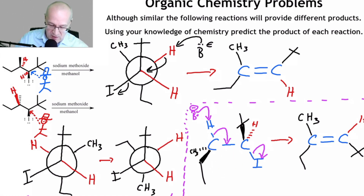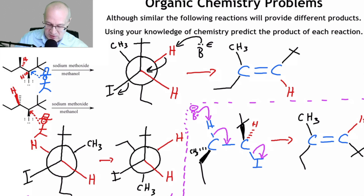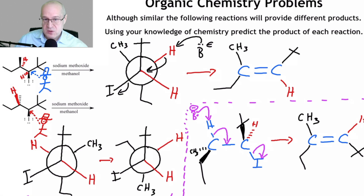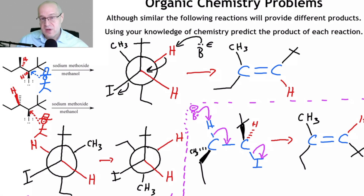Comparing the two diastereomers: for the first diastereomer we get the hydrogen and ethyl on the same side, but switching to the other diastereomer we get the methyl and hydrogen on the same side. So we get a very different stereochemical outcome just by using the other diastereomer.